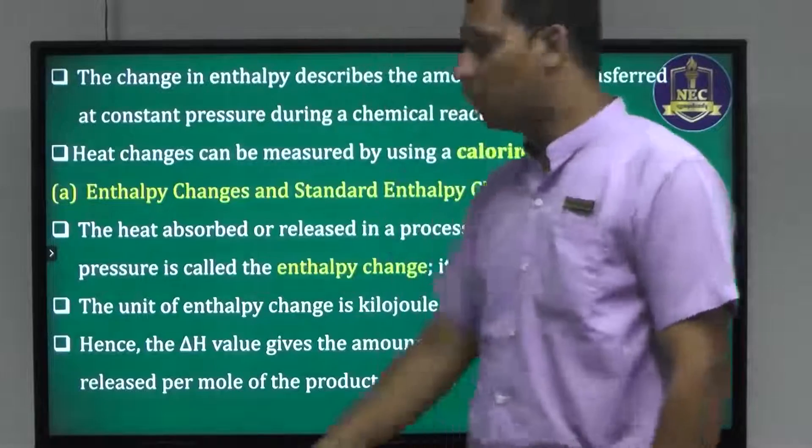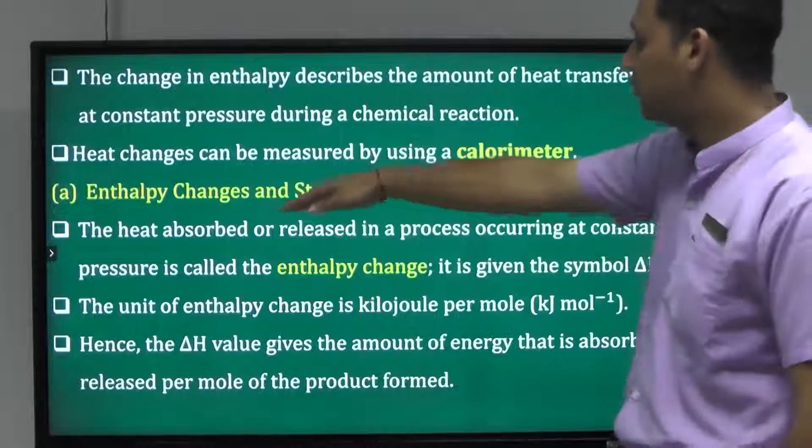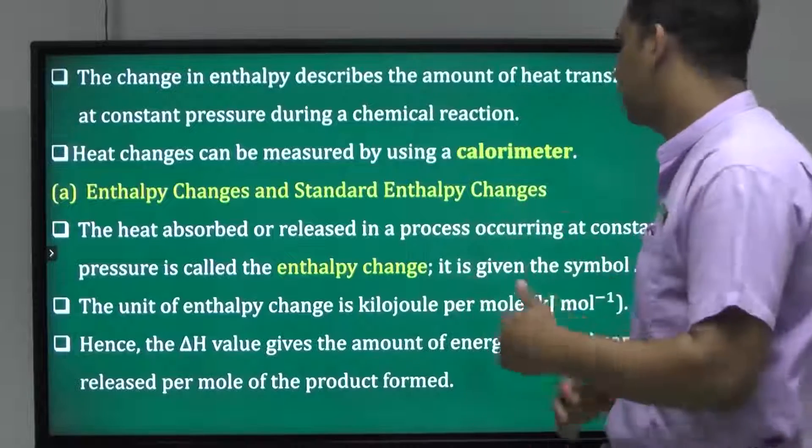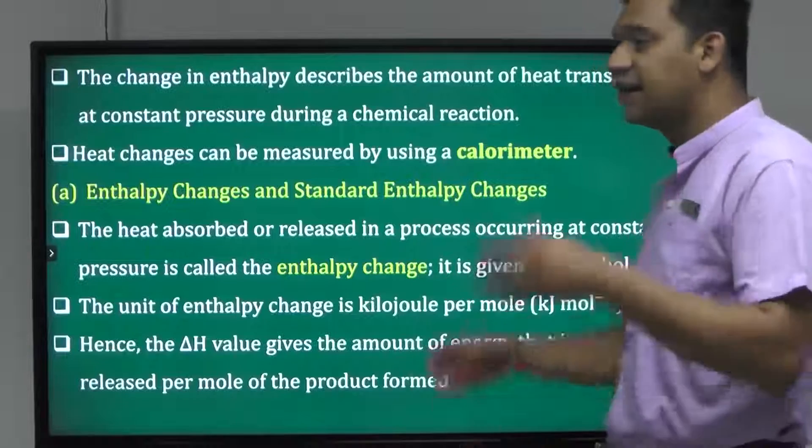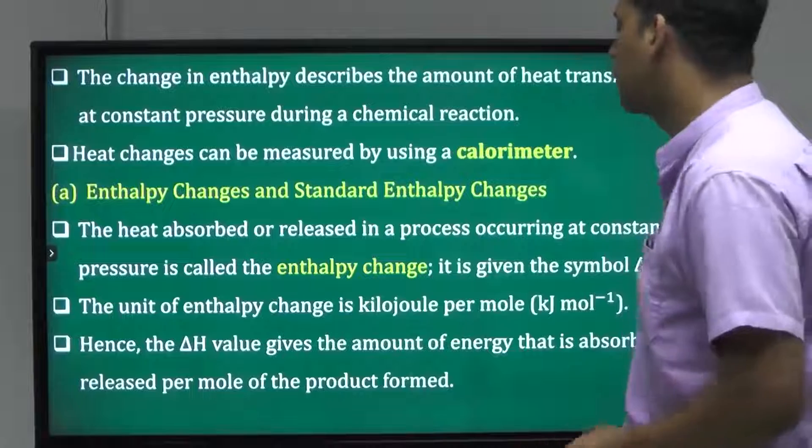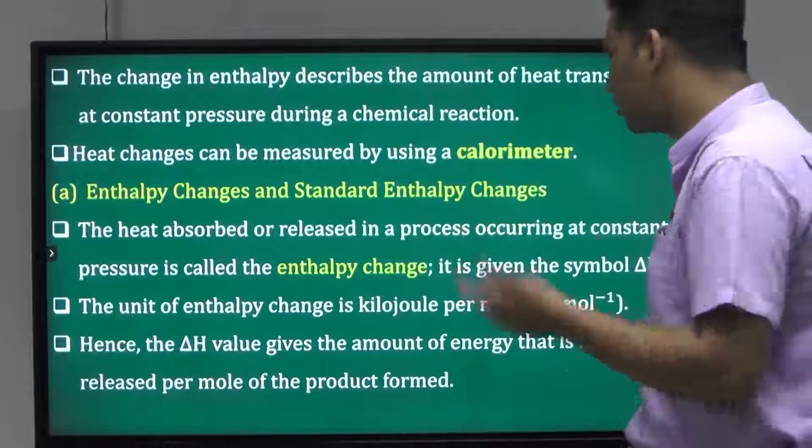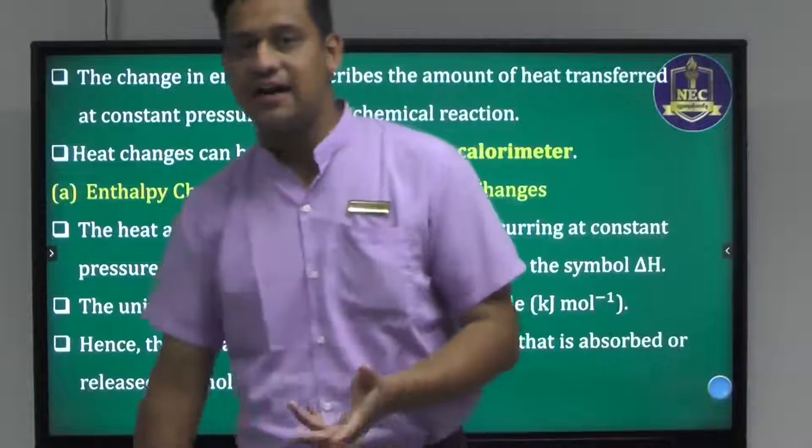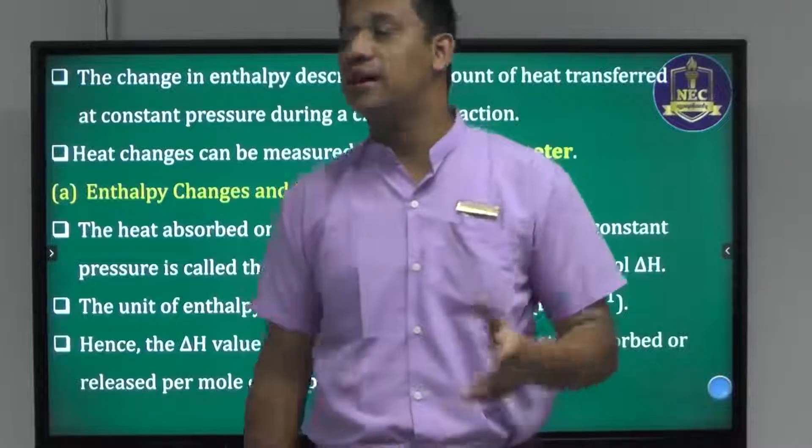The unit of enthalpy change is kilojoules. Hence, the delta H value gives the amount of energy released per mole of the reactants.